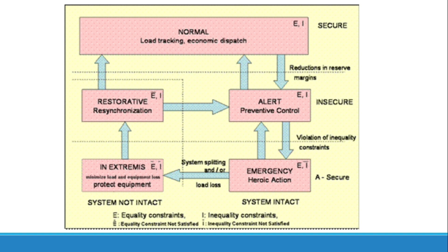Let me explain the states of the power system using the flow chart. In the normal state we have load tracking and economic dispatch, and both inequality and equality constraints are satisfied. If there is a reduction in the reserve margin, we go to the alert state, which is an insecure state. If the operator performs preventive control, the system returns to normal; otherwise it moves to the emergency state.